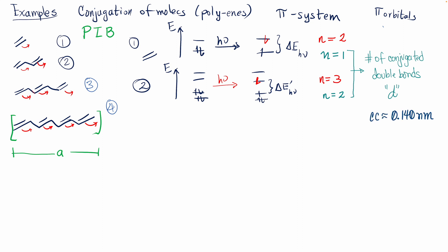Another thing to take into consideration is the length of the box. We're going to make a simplification: double bonds and single bonds are different in length, but we're going to take roughly the average between the two. So the length of the chain — which is equal to the length of the box in the particle-in-a-box model — is going to be equal to two times the number of double bonds minus one, multiplied by the average carbon-carbon bond length.